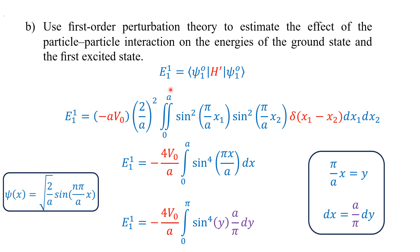The perturbation is −A·V₀·δ(x₁ − x₂). Taking V₀ outside the integral, we integrate over dx₁ dx₂. The delta function δ(x₁ − x₂) is nonzero only when x₁ = x₂ = x, reducing this to a single integral with sin⁴(πx/A). Multiplying the prefactors: (2/A)² gives 4, the factor of A from the perturbation cancels one A in the denominator, leaving −4V₀/A times the integral from 0 to A.